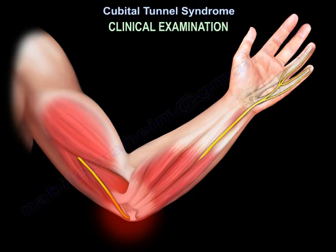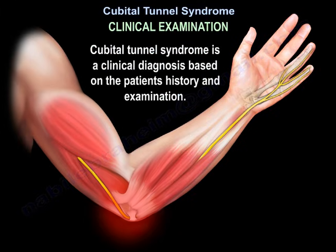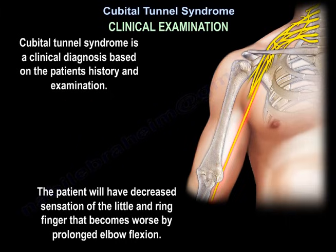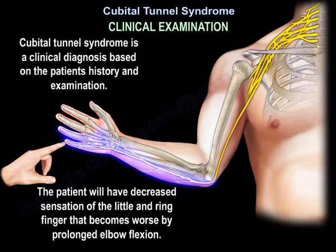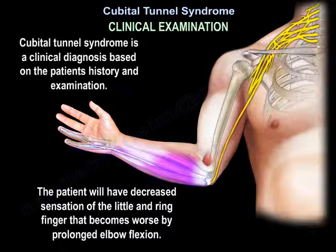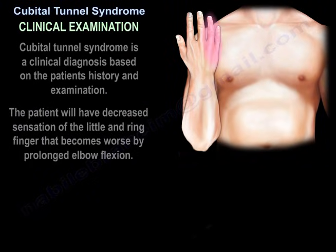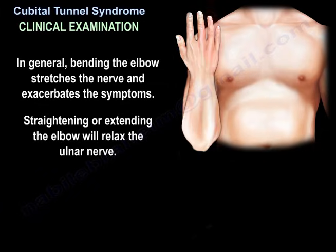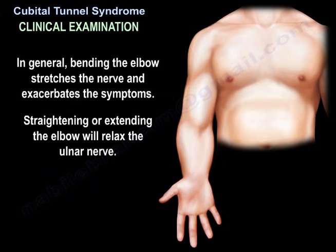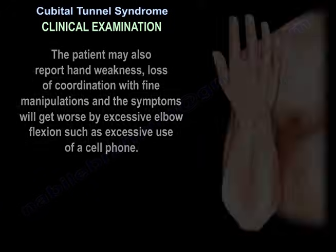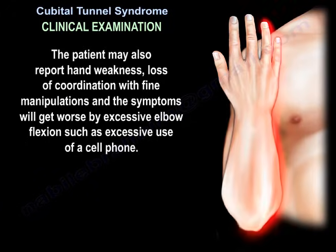Cubital tunnel syndrome is a clinical diagnosis based on the patient's history and examination. The patient will have decreased sensation of the little and ring finger that becomes worse with prolonged elbow flexion. In general, bending the elbow stretches the nerve and exacerbates the symptoms, while straightening or extending the elbow relaxes the nerve. The patient may also report hand weakness and loss of coordination with fine manipulations. Symptoms worsen with excessive elbow flexion, such as excessive use of a cell phone.